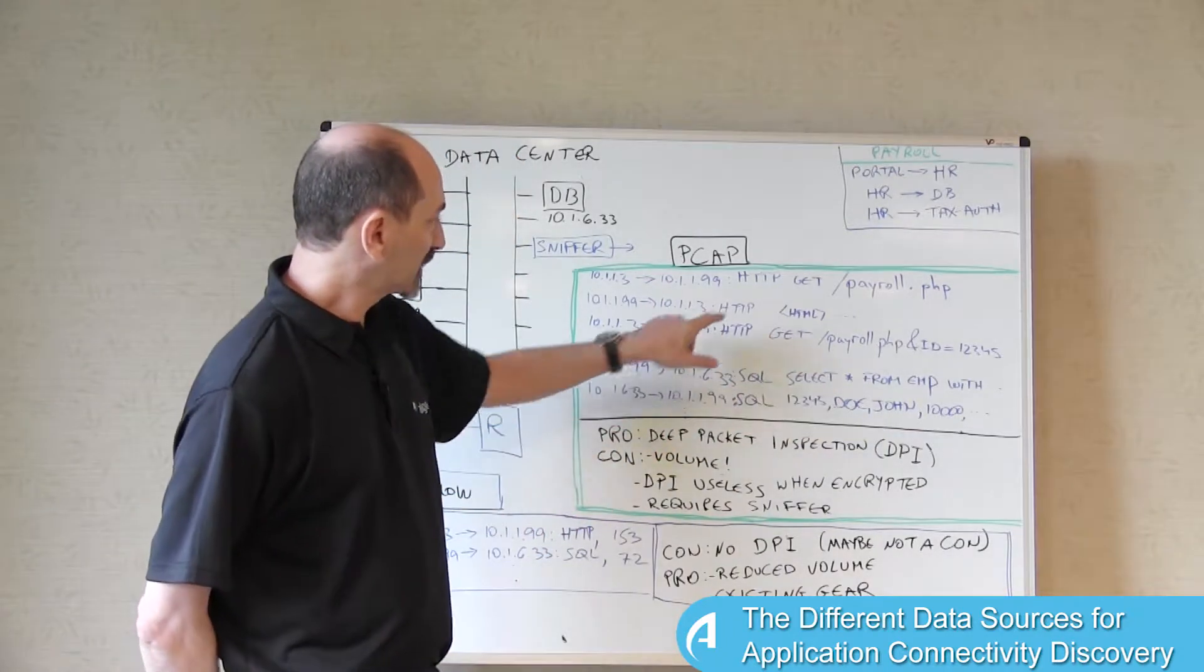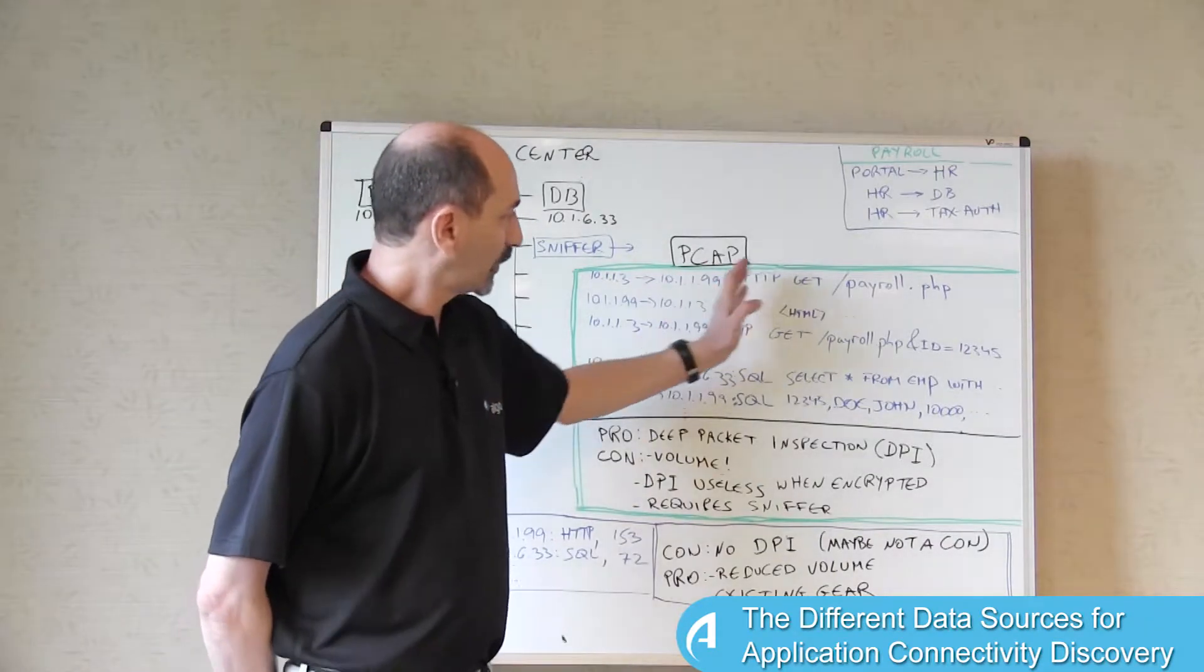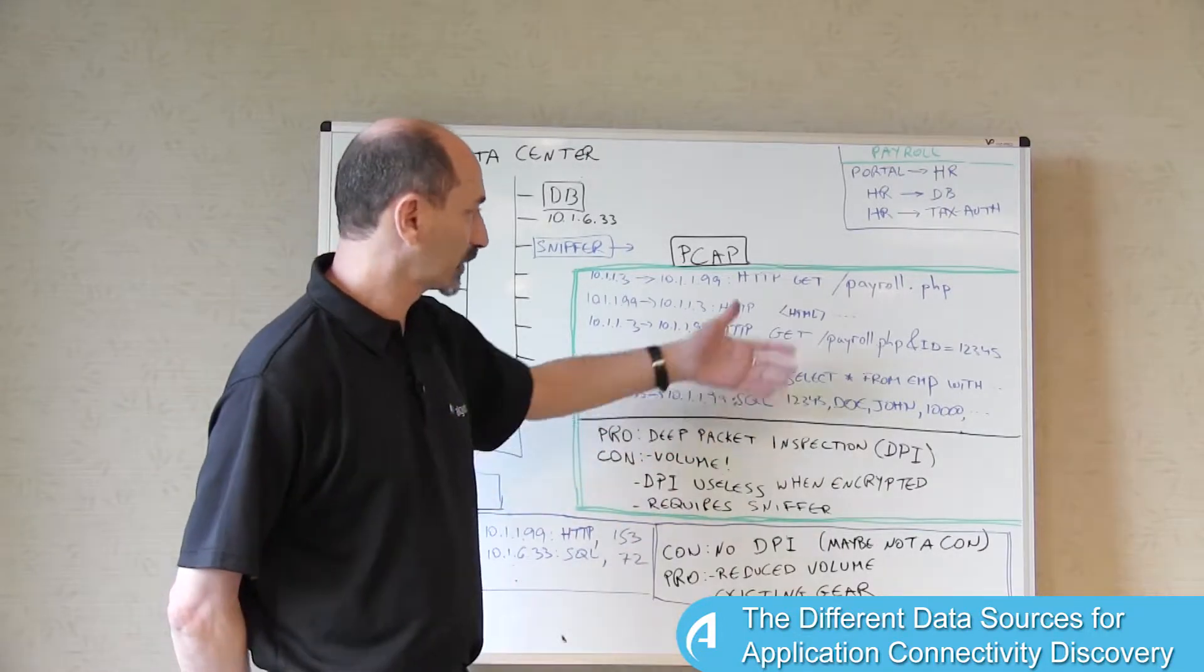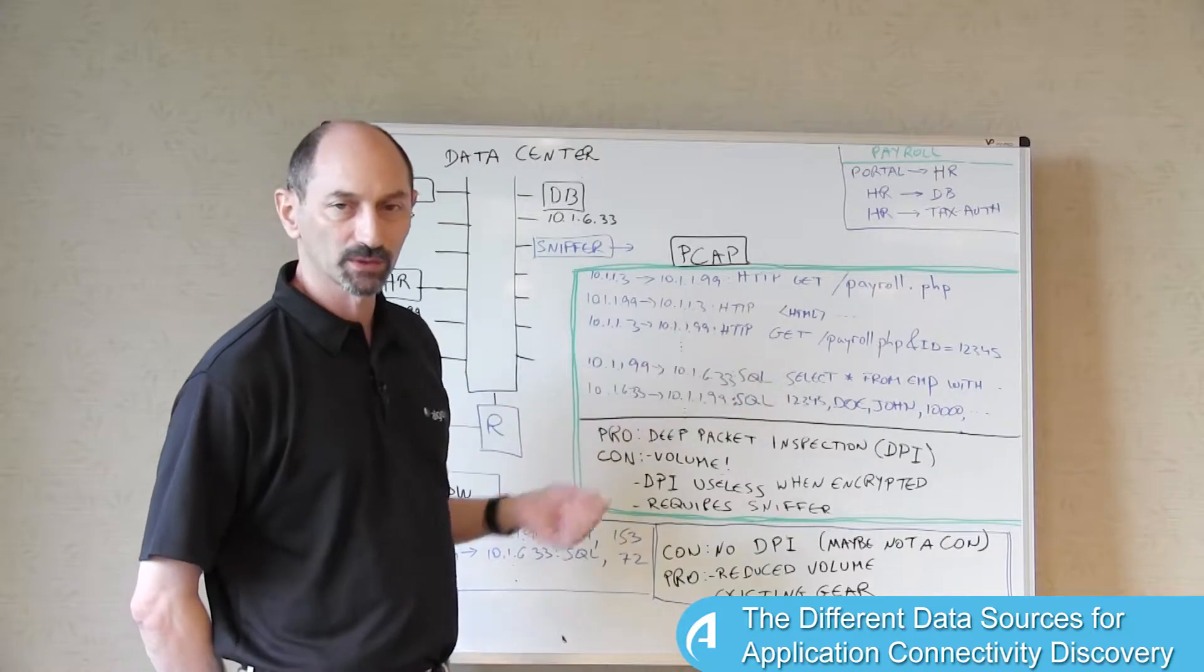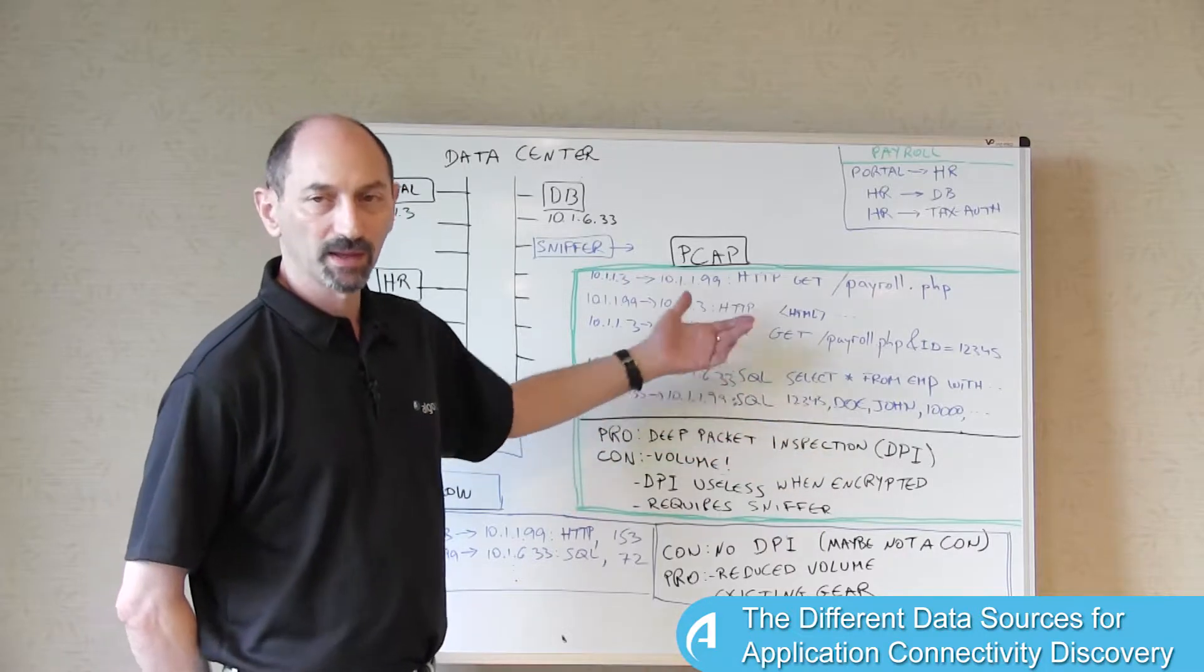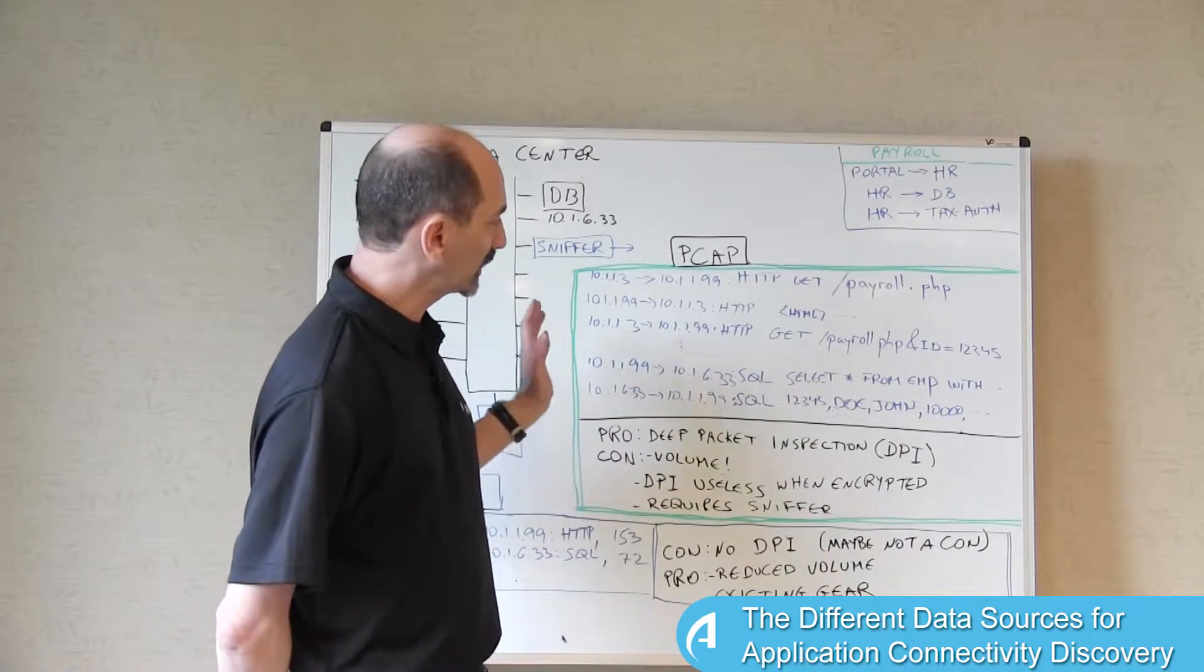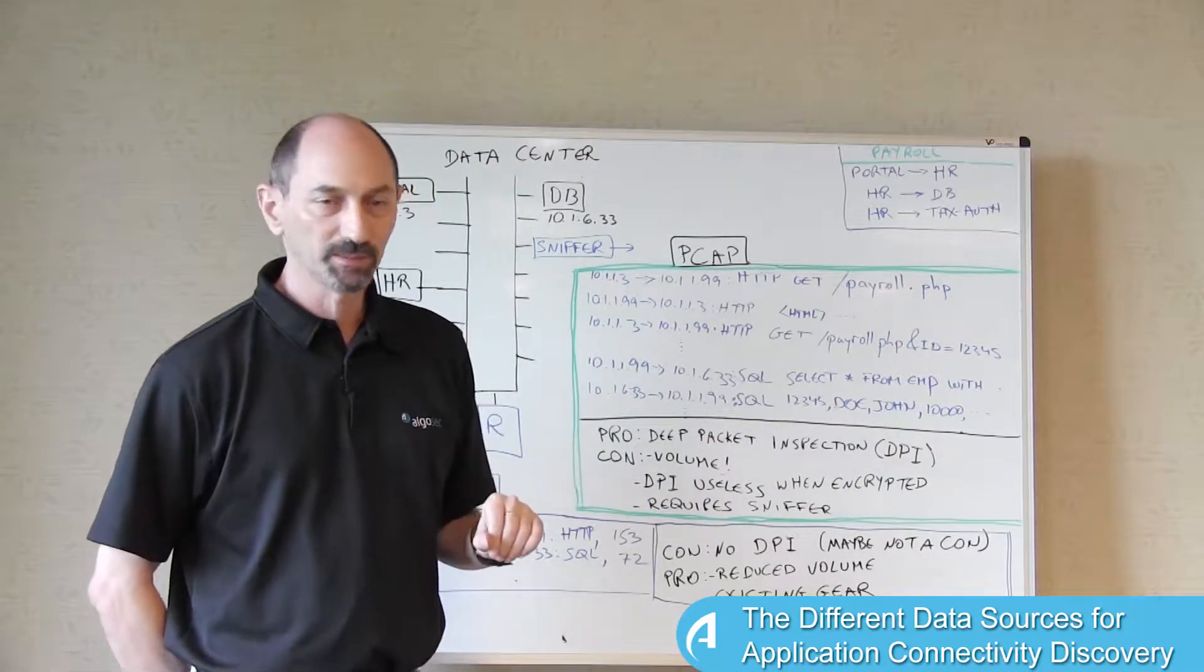If instead of HTTP, the application were using HTTPS, all these payloads would have been encrypted and the DPI software would have nothing to look at and would be unable to deduce anything from the encrypted data. We're seeing encryption deployed also in database protocols and email and many other places. So encryption is on the rise and it's hiding these interesting pieces of information from the DPI software.